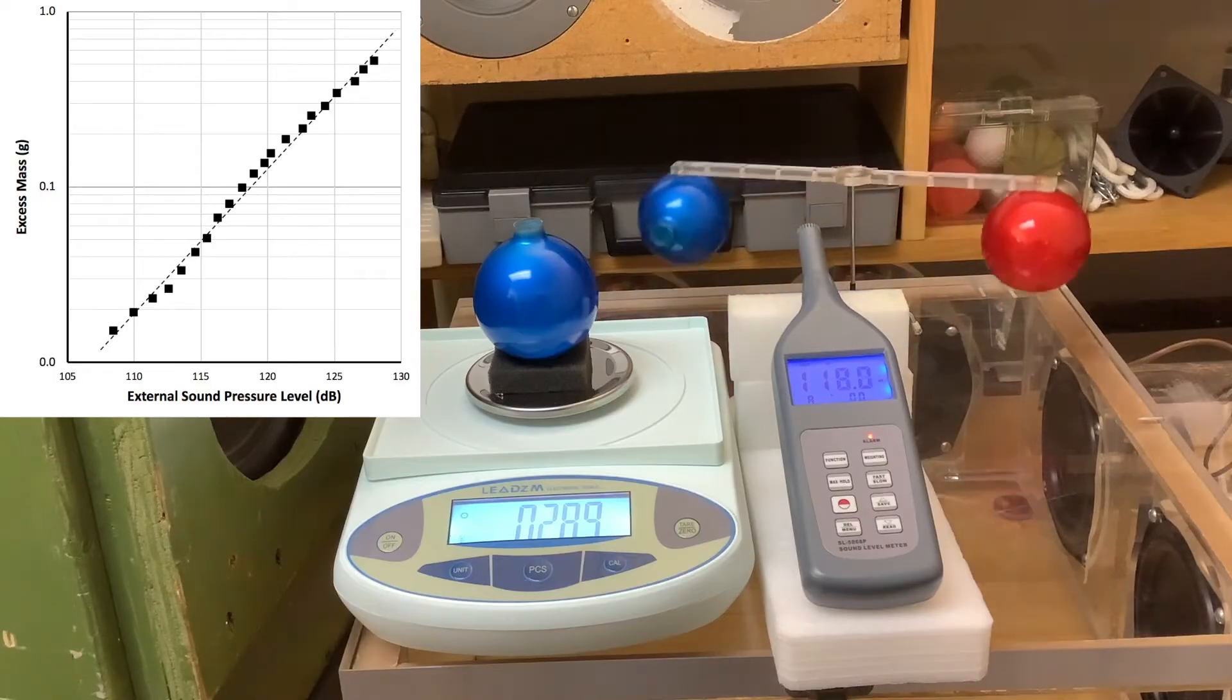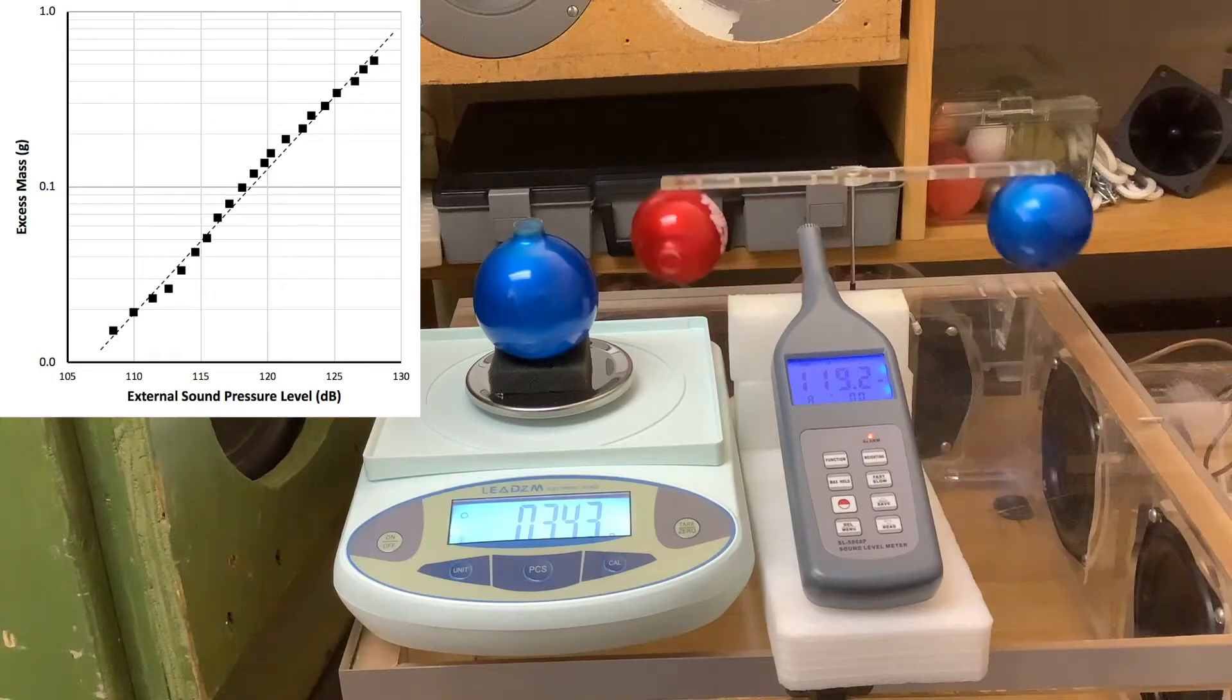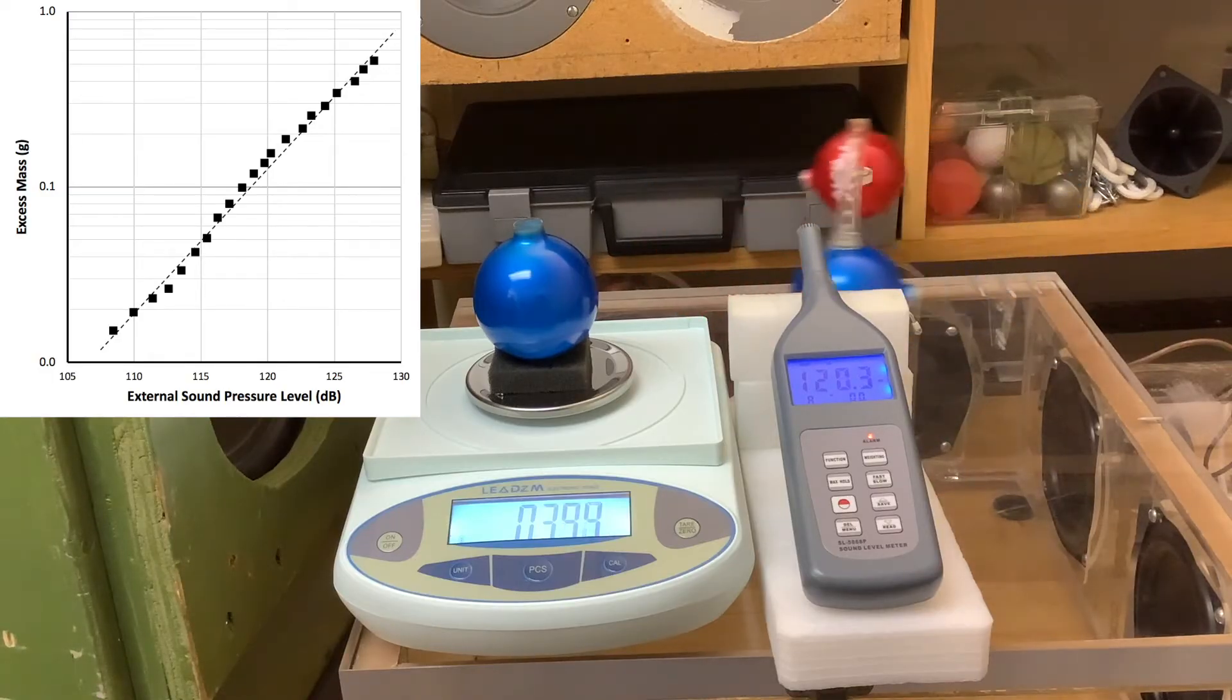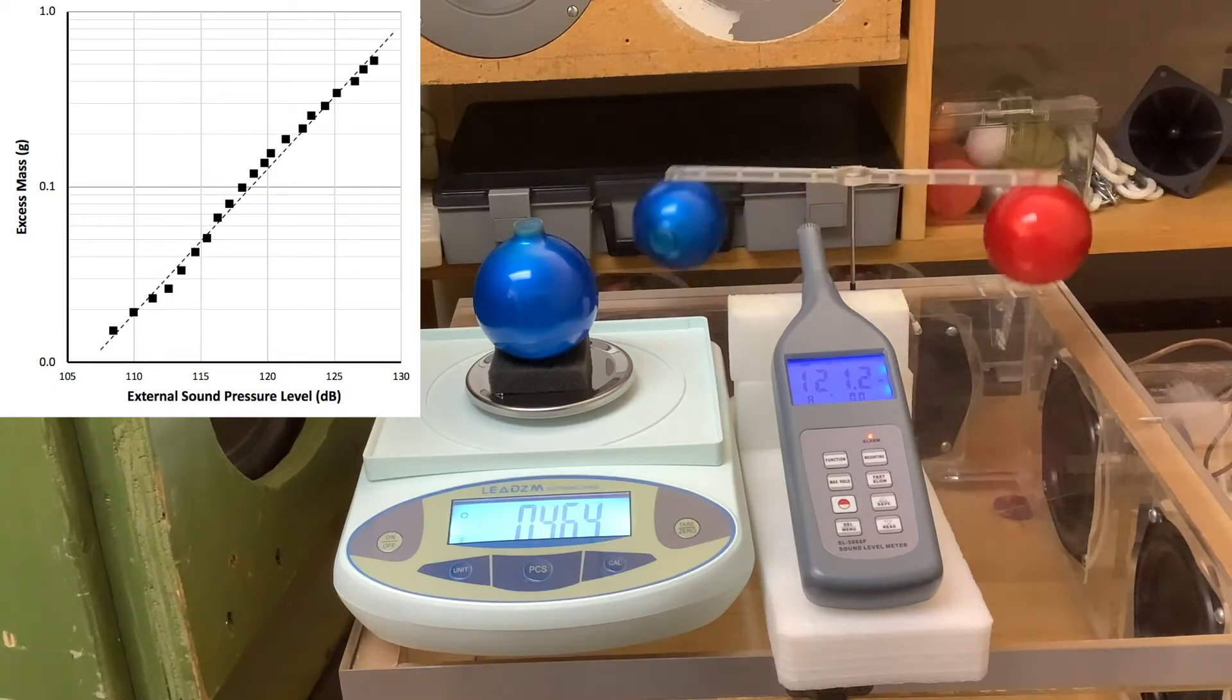Plotting the excess mass on a log scale versus the corresponding sound pressure level shows a strong correlation between the two, and it agrees fairly well with an explanation of the forces being due to a second order acoustically induced pressure difference between the inside and outside of the resonator.